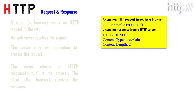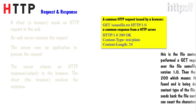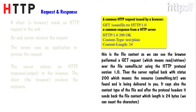A common HTTP request issued by a browser and a common response from an HTTP server are shown here. The browser performs a GET request, which means read and retrieve, over a text file using HTTP protocol version 1.0. The server replied back with a status indicating the resource was found and is being delivered, along with the content type of the file. After the protocol headers, it sends back the file content, which is 24 bytes in length.